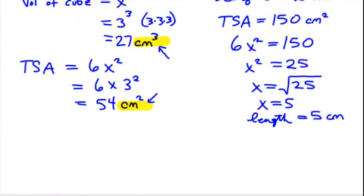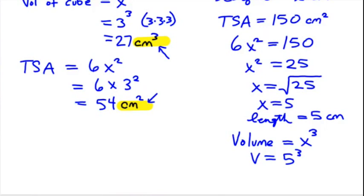If the length is equal to 5 centimeters, then the volume — remembering X cubed — is going to be 5 cubed. So our volume is going to be 125 cubic centimeters.